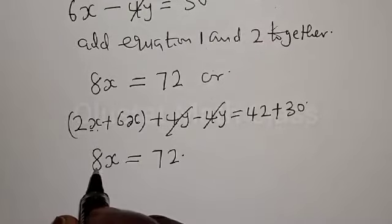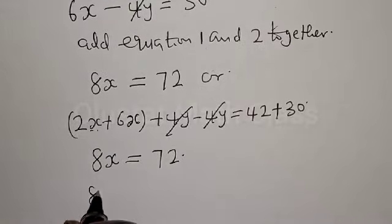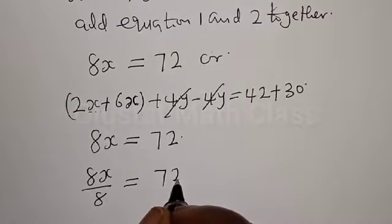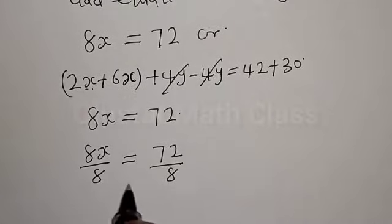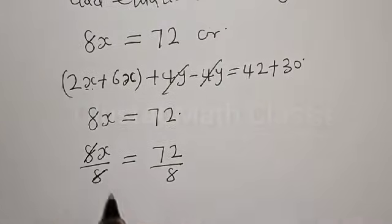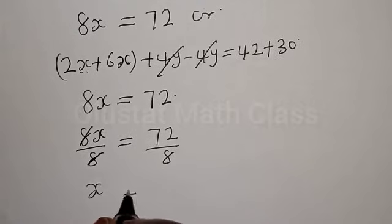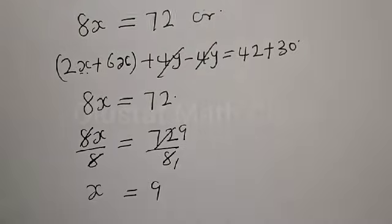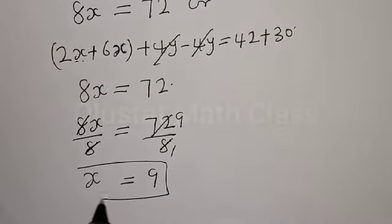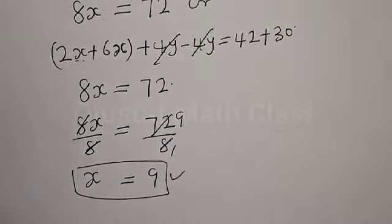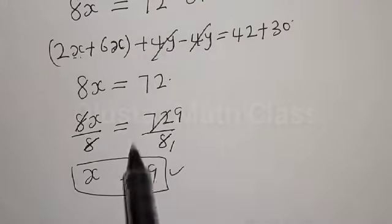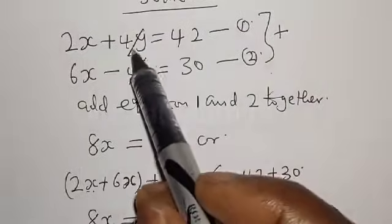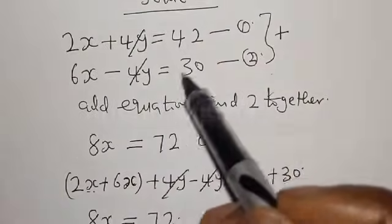So 2x plus 6x is 8x, equal to 42 plus 30 which is 72. Now let's divide both sides by 8. We have 8x divided by 8 is equal to 72 divided by 8. Therefore our final answer is x is equal to 9.